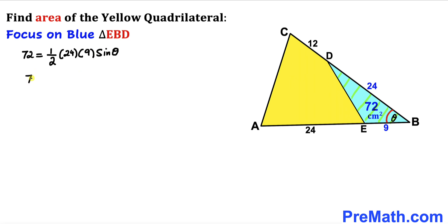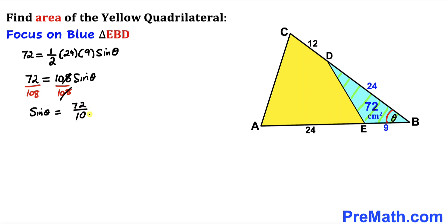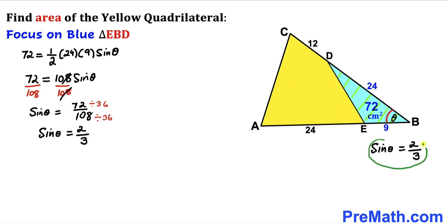So we have 72 equals 108 times sine of theta. Dividing both sides by 108 to isolate sine of theta gives us sine of theta equals 72 divided by 108. Dividing both numerator and denominator by 36, our sine of theta equals 2 divided by 3.